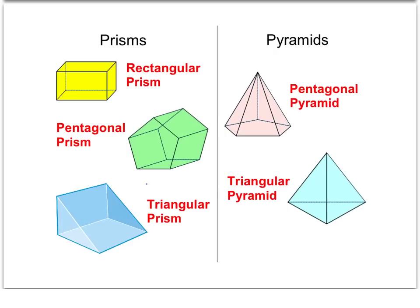When naming prisms and pyramids, the name has two parts: the name of the base and then either 'prism' or 'pyramid.' For example, a rectangle base gives us a rectangular prism, a pentagon base makes a pentagonal prism, and two triangle bases make a triangular prism. A solid with one triangular base is a triangular pyramid, and one with a single pentagon base is a pentagonal pyramid.